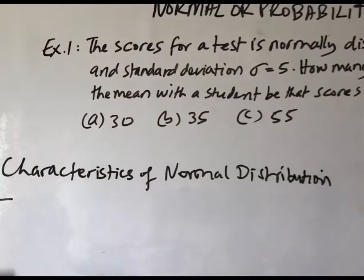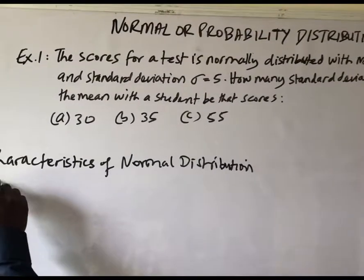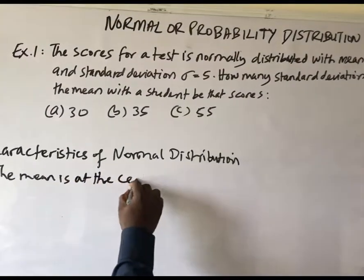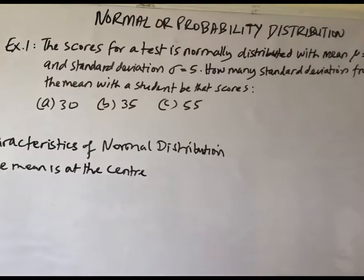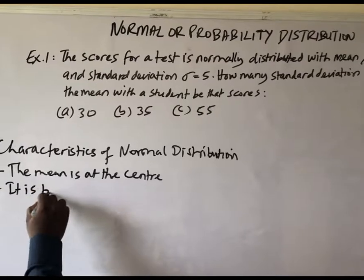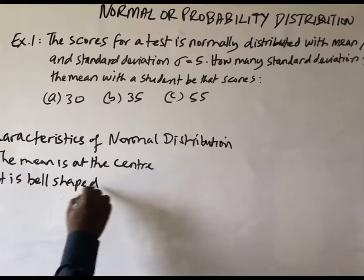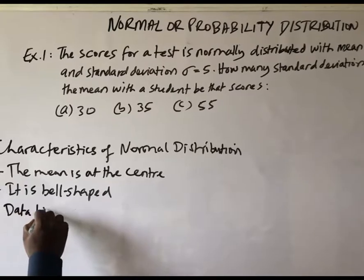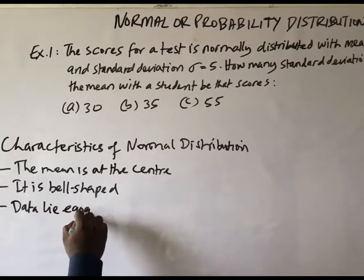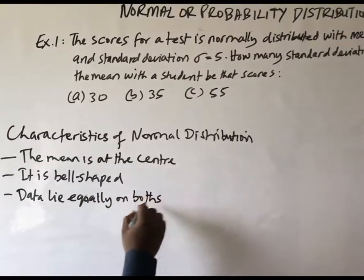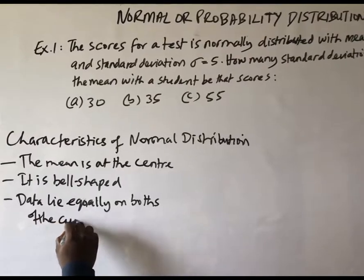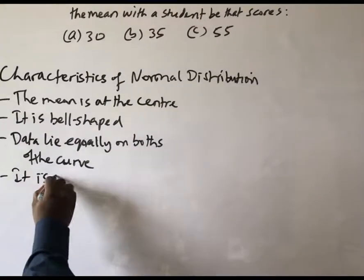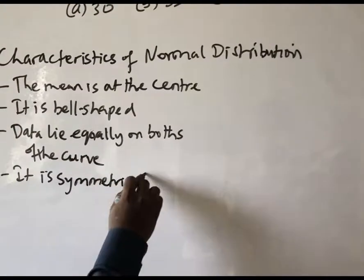One of the characteristics is that the mean is at the center of the distribution. Number two, it is bell-shaped. Number three, the data lie equally on both sides of the curve. And it is also symmetrical.